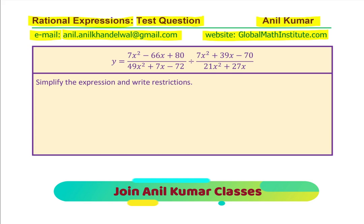The question is before you. You can pause the video, answer the question, and then look into my suggestions. You need to simplify the expression and write restrictions also, so do not forget to write restrictions. The question is: y equals 7x squared minus 66x plus 80, divided by 49x squared plus 7x minus 72. The whole fraction is divided by 7x squared plus 39x minus 70, over 21x squared plus 27x. You can now pause the video and answer this particular question.